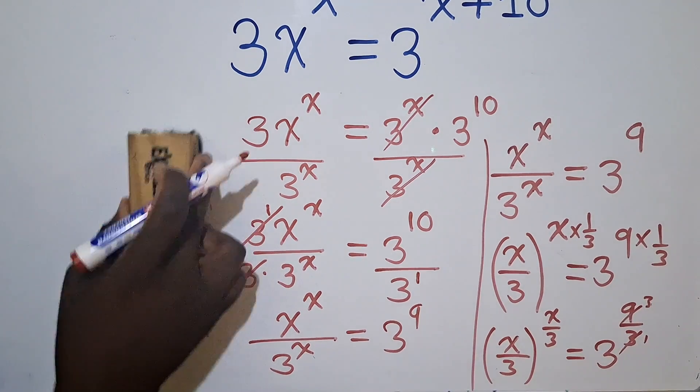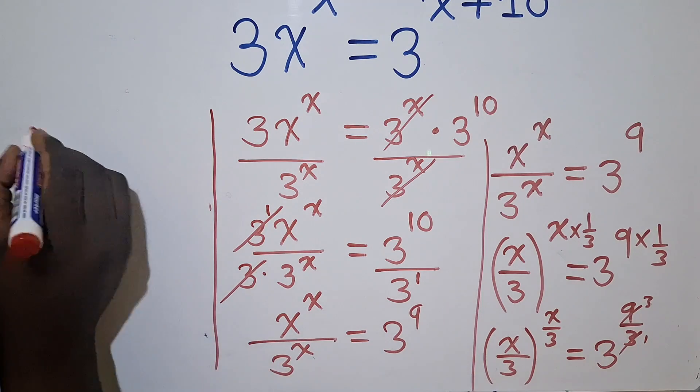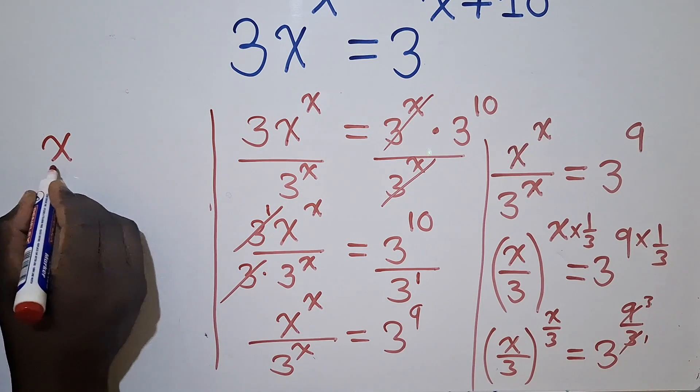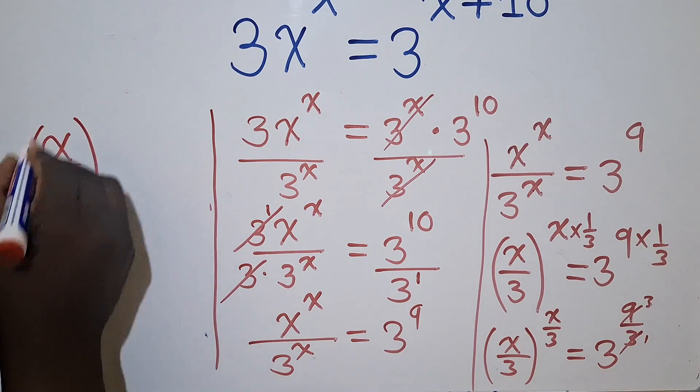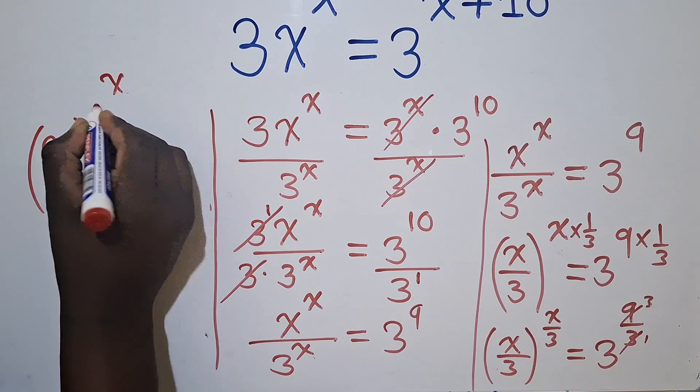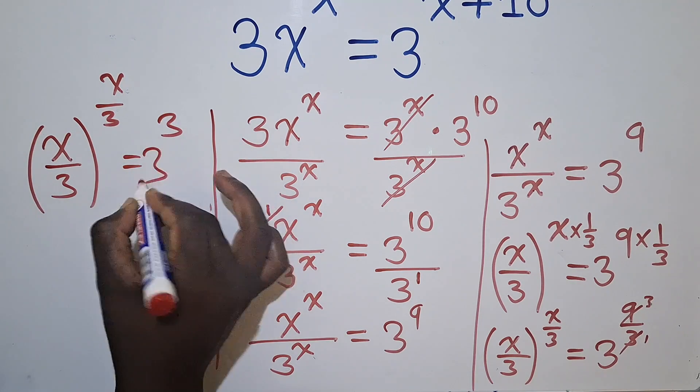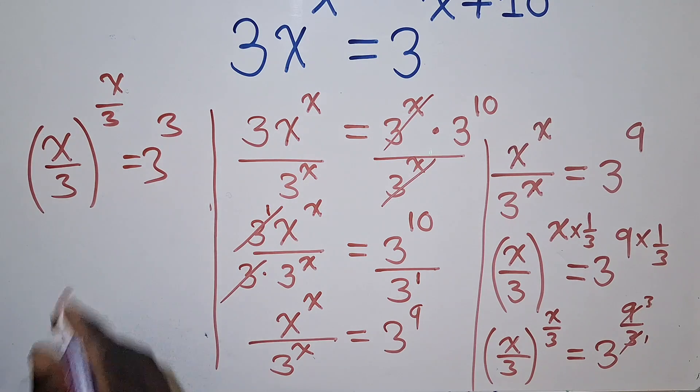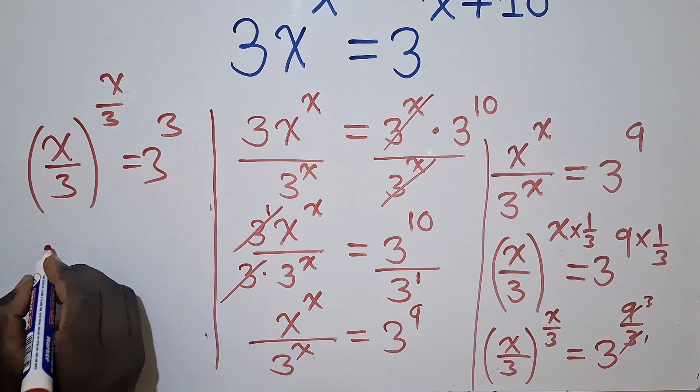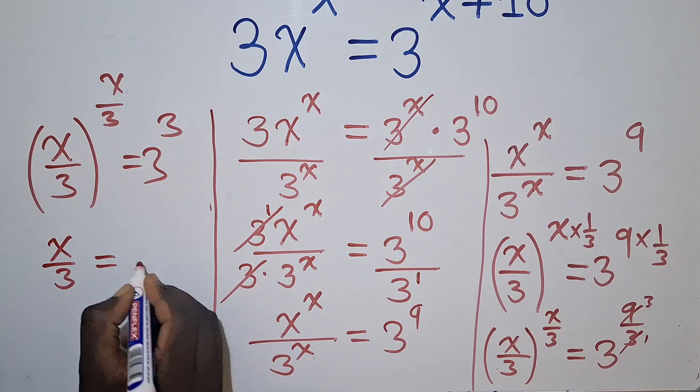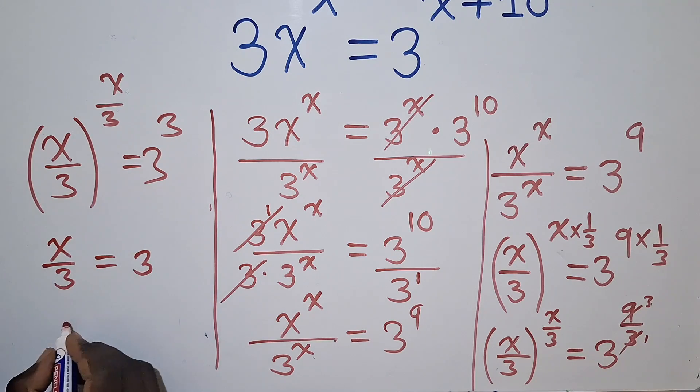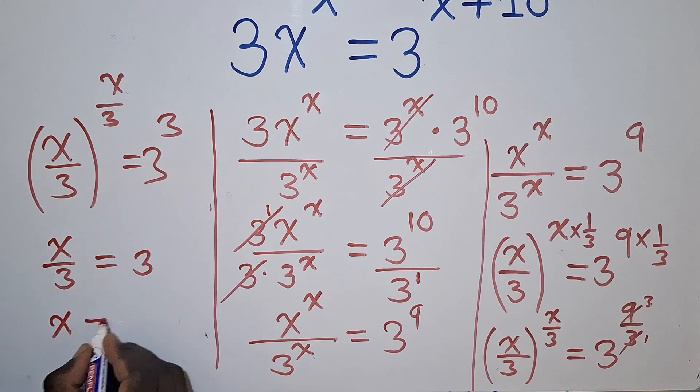we now have X over a 3 power X over a 3, which is equal to 3 there, 3 power 3. So now the property can be used. We're going to say X over 3 is equal to a 3. We cross multiply. The value of X will simply be equal to a 9.